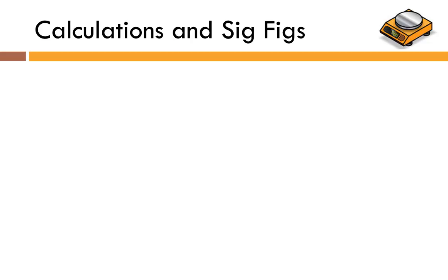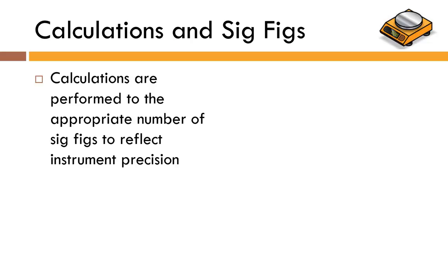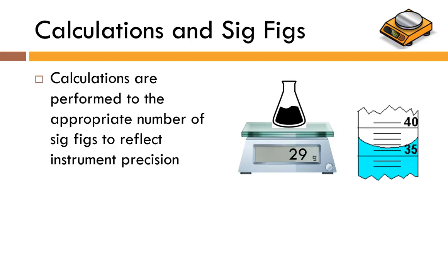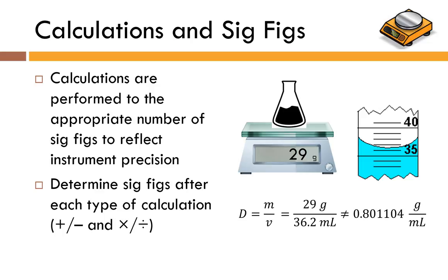Now that you've taken your measurements and know how to count sig figs, you'll have to perform calculations. Calculations have to reflect the precision of the instrument. For example, finding density: if the mass of a liquid is 29 grams and the volume is 36.2 mL, you can't express the answer to any number of decimal places you feel like — you're limited by the instrument's precision. There are really only two rules for our class: one for addition and subtraction, and one for multiplication and division.